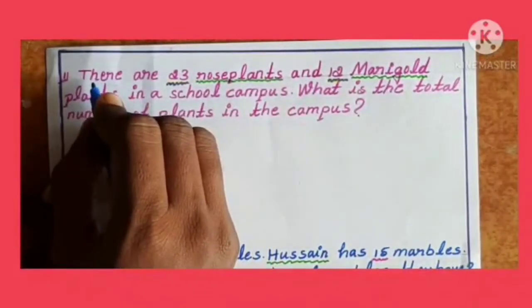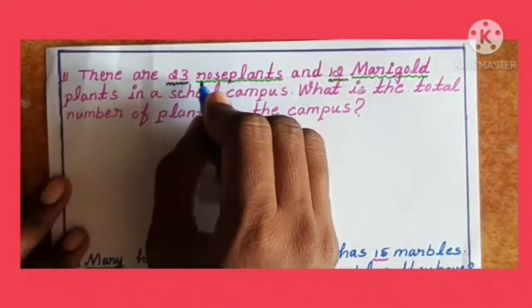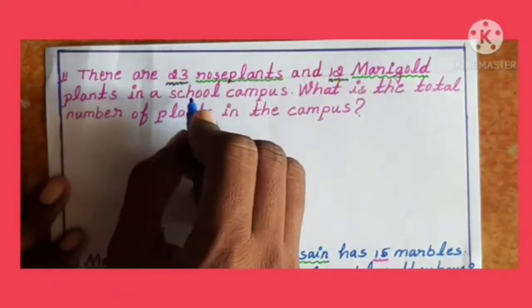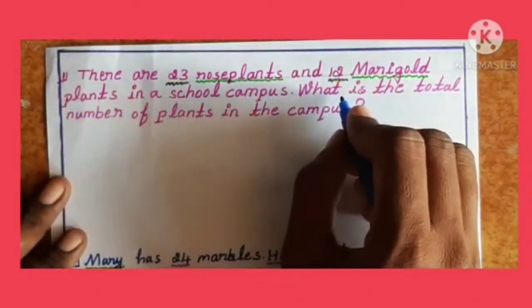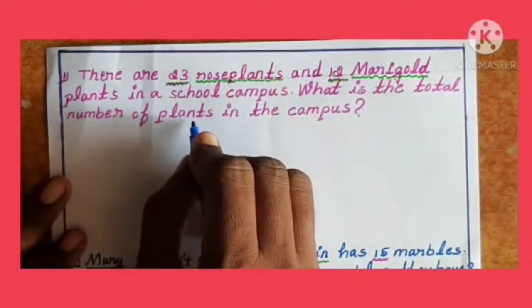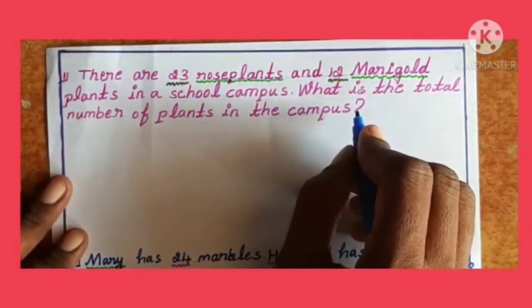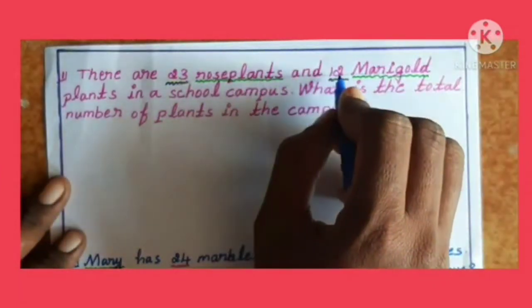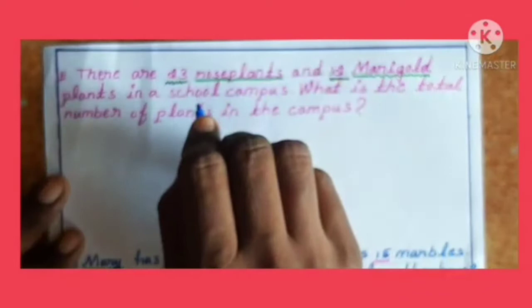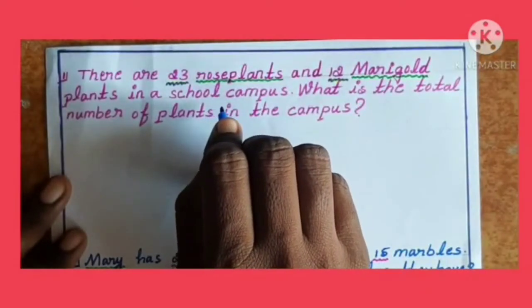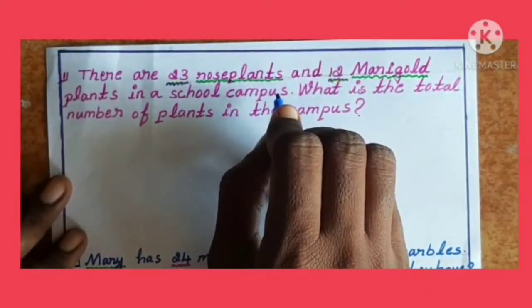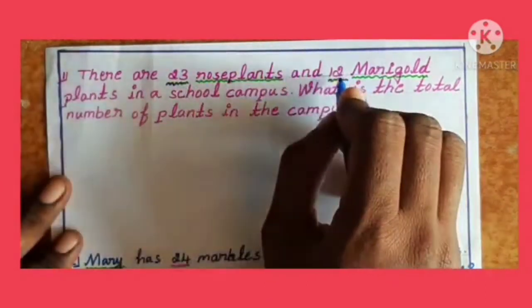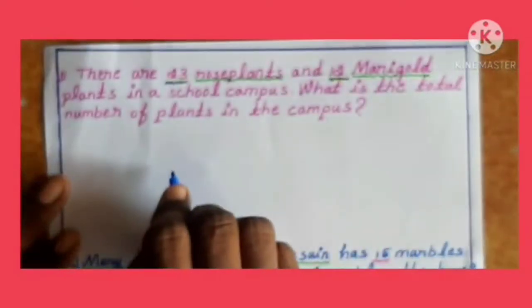Next, first one: there are 23 rose plants and 12 marigold plants in a school campus. What is the total number of plants in the campus? So in the school campus, there are 23 rose plants and 12 marigold plants. You can find out the total number of plants. First, form the sentence — add 23 plus 12 to get the answer.